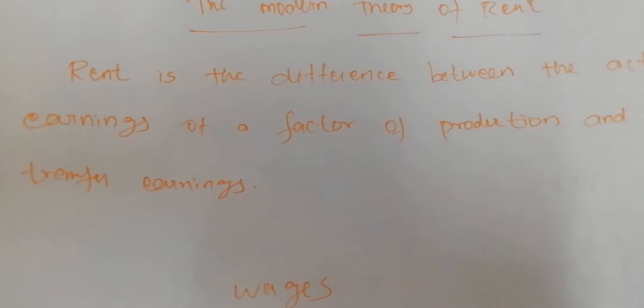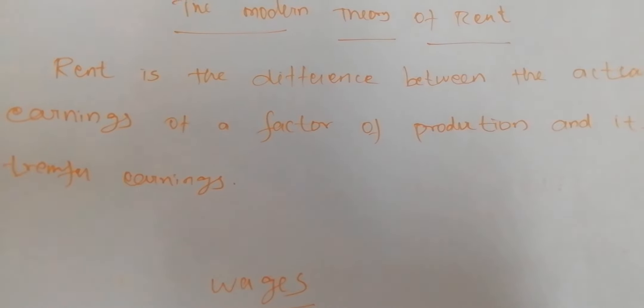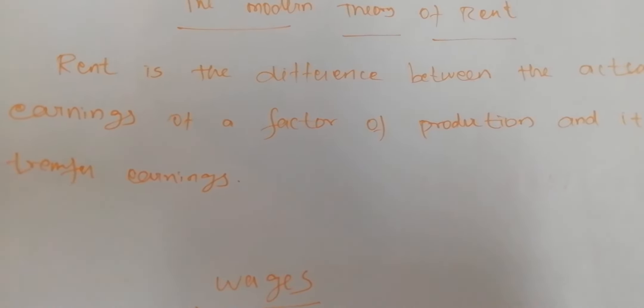The essence of the modern concept of rent is the conception of surplus — the earnings of a particular part of a factor of production over and above the minimum earnings necessary to induce it to work. According to the modern theory, rent is the difference between the actual earnings of a factor and its transfer earnings. Transfer earnings mean the earnings a laborer gets when he moves to another type of work if he is not employed.